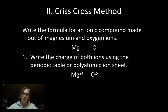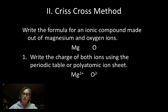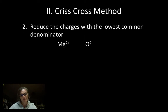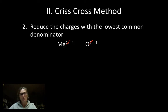Topic two: the Criss-Cross method. A typical problem would be: write the formula of an ionic compound made out of magnesium and oxygen ions. Step one: write the charge of both ions using the periodic table or polyatomic ion sheet. Magnesium is in the second column with the alkaline earth metals and will form two plus ions. Oxygen is in the non-metal side of the periodic table, in the column right before the halogens, and those elements form two minus ions. Then, if I can, I reduce the charges with the lowest common denominator. Magnesium and oxygen can both be divided by two, so now my charges are going to be plus one and minus one.